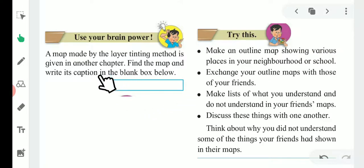Try this: Make an outline map showing various places in your neighborhood or school. A quick map ready karna hai of your surrounding or your school. Exchange your outline maps with those of your friends. Make a list of what you understand and do not understand in your friend's map. Discuss these things with one another. Think about why you did not understand some of the things your friends had shown in their map.